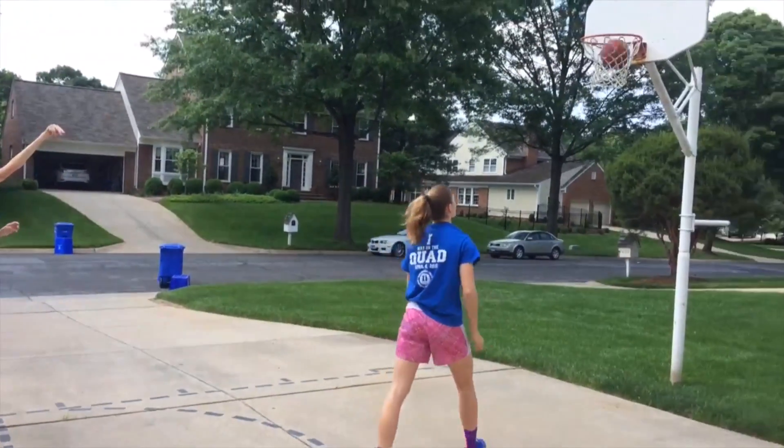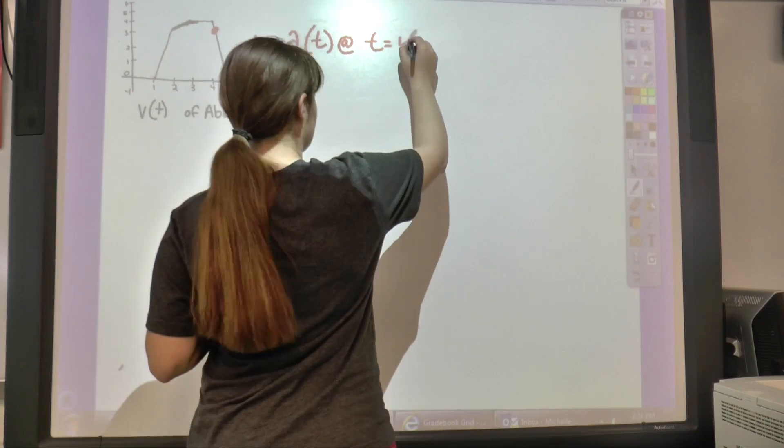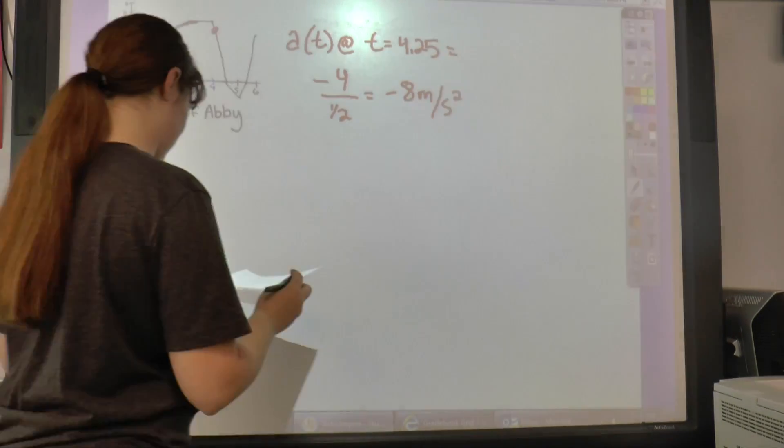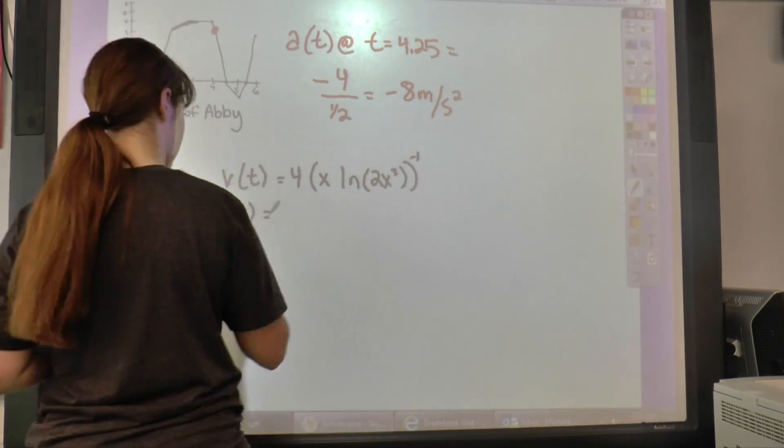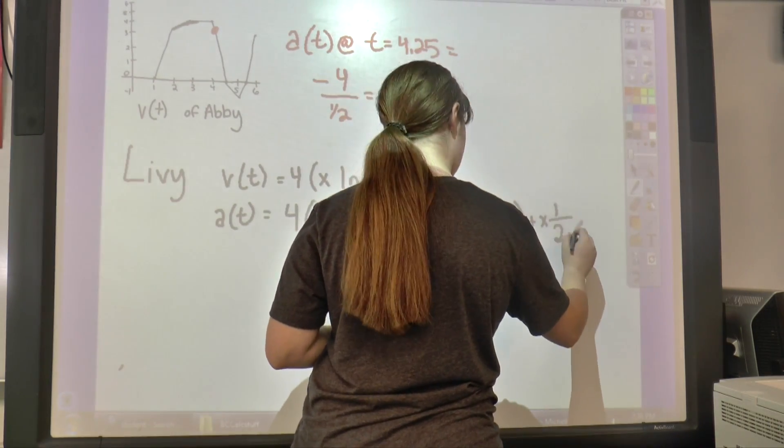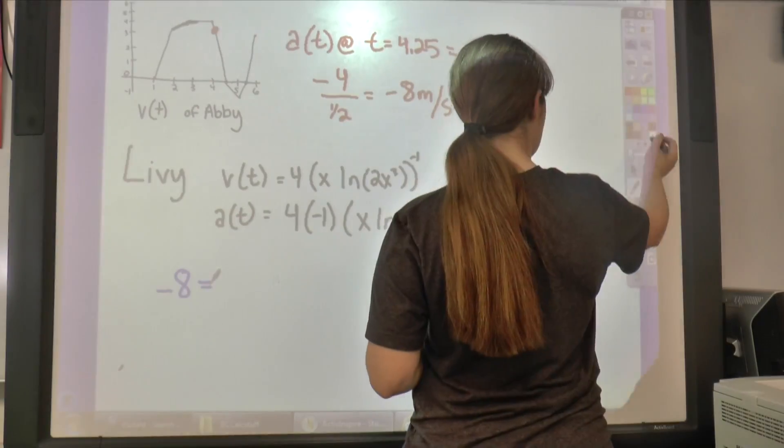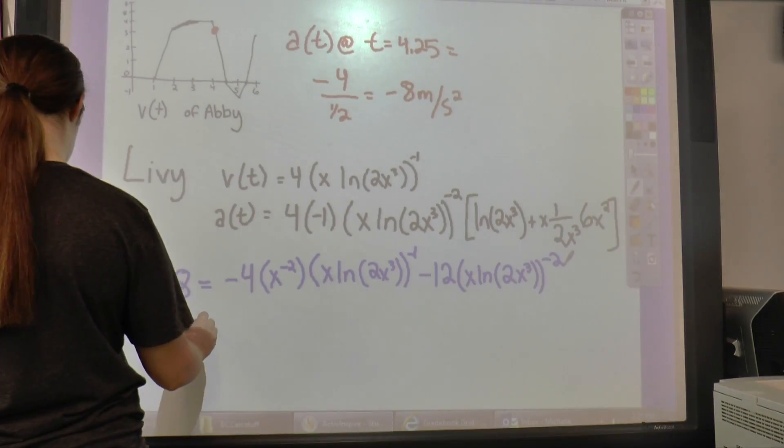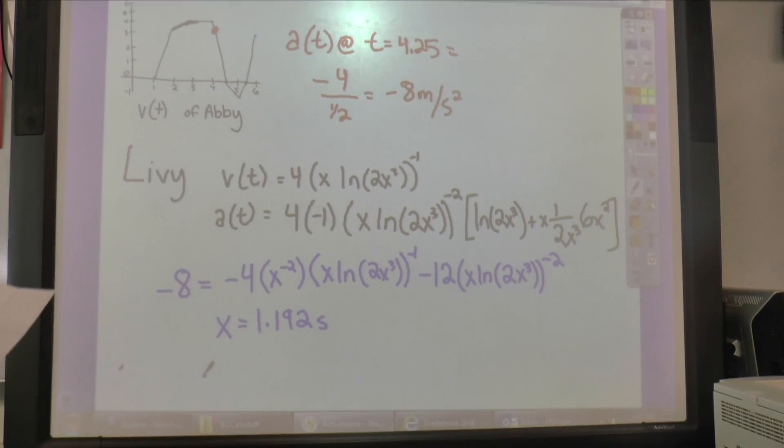Now I want to know if Livy will ever have the same acceleration that Abby does at t equals 4.25. We have to do a chain rule followed by a product rule, which includes another chain rule in it. I then take Abby's acceleration of negative 8 meters per second squared and set it equal to Livy's acceleration equation. I find that x equals 1.192 seconds using my calculator. This means that at 1.192 seconds, Livy's acceleration will be equal to Abby's acceleration at 4.25 seconds.